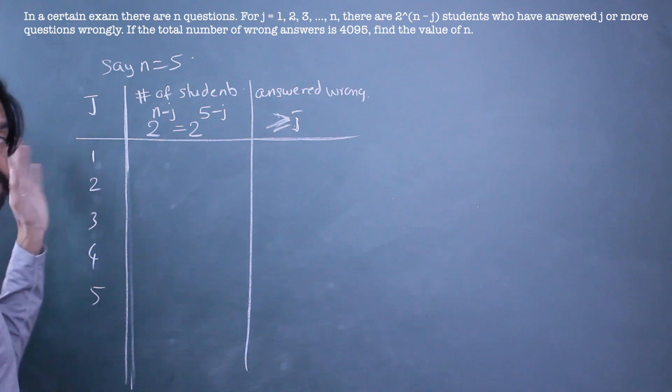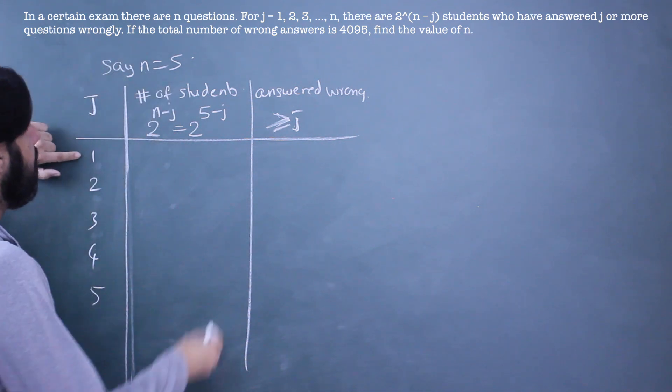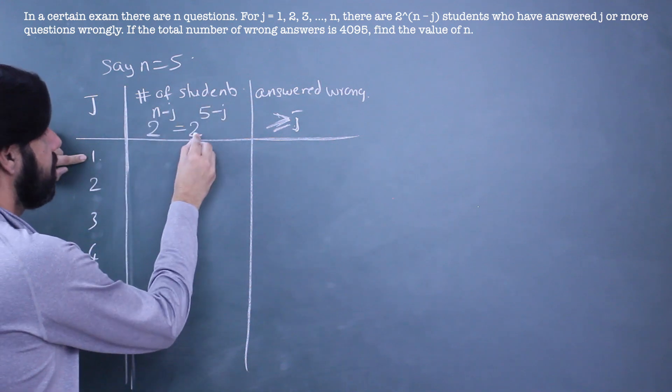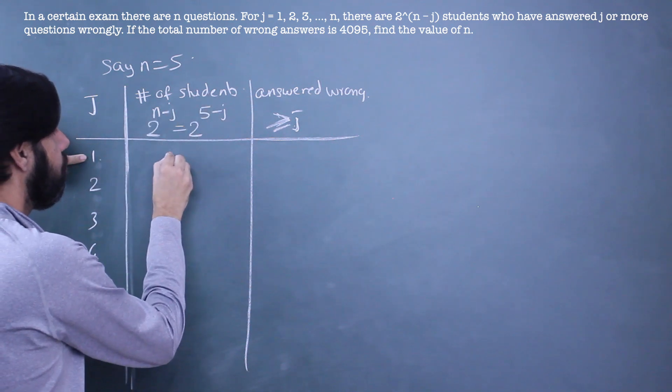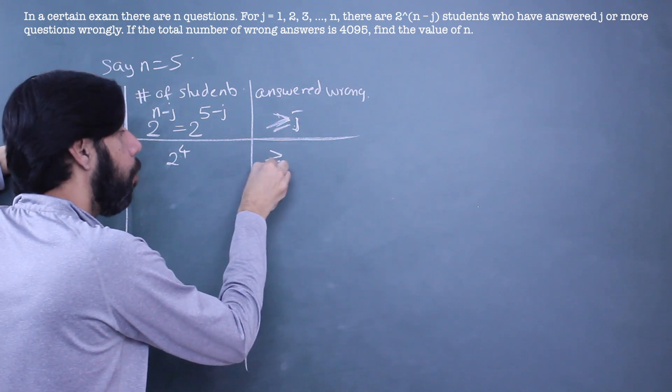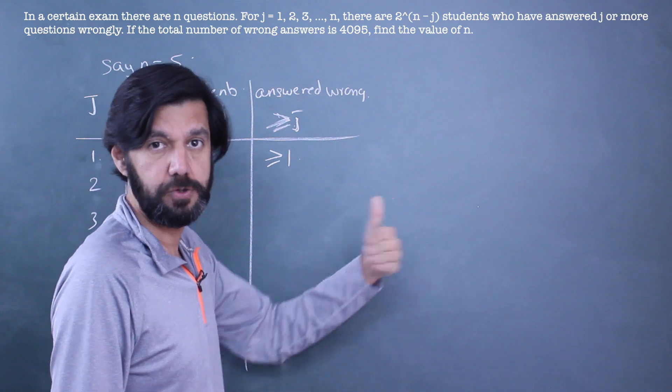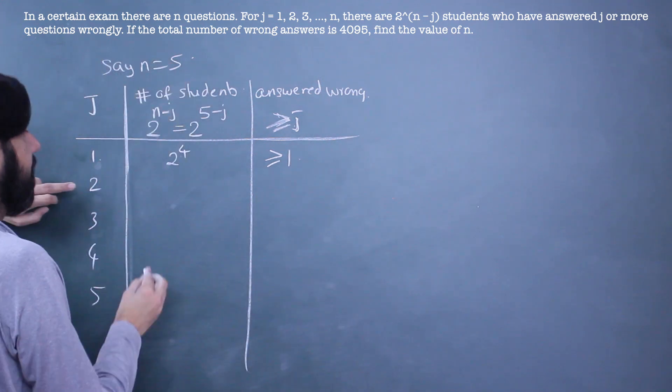Let's just plug in the values now that we've taken a value of j and n. When j is 1, this will become 2^4. There are 2^4 students who have answered 1 or more than 1 wrong - more than 1 means 1, 2, 3, 4, 5 wrong. There are 5 questions only.